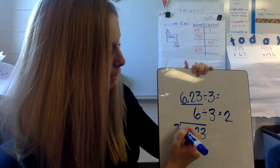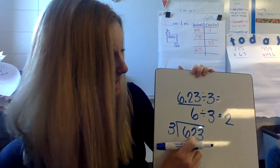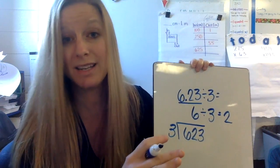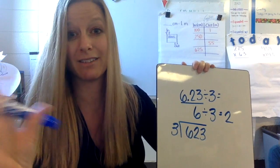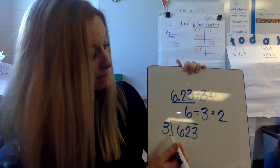Now if I divide 6 and 23 hundredths and I divide that by 3, you know what I'm going to do? I'm just going to ignore that decimal. I'm going to get rid of it. I don't need you right now, I will get you when I need you. So goodbye for now. Okay, bye. Now I'm just going to simply divide. How many times does 3 go into 6?